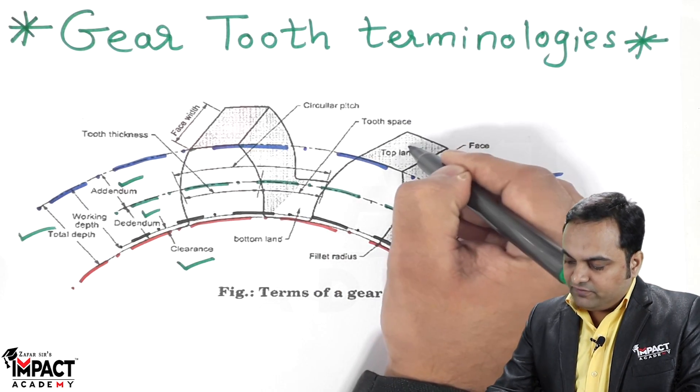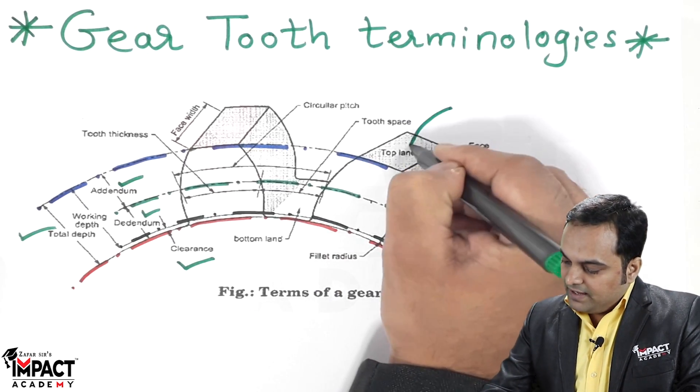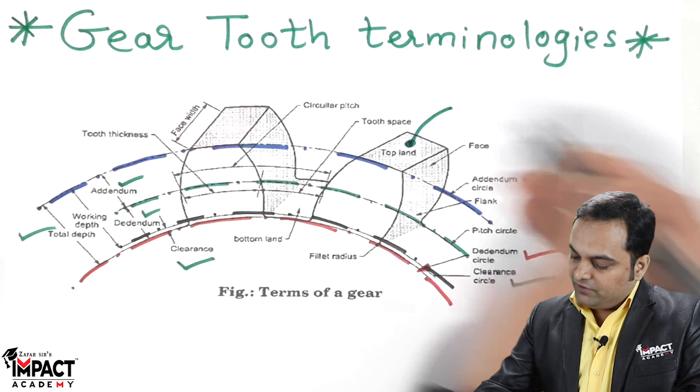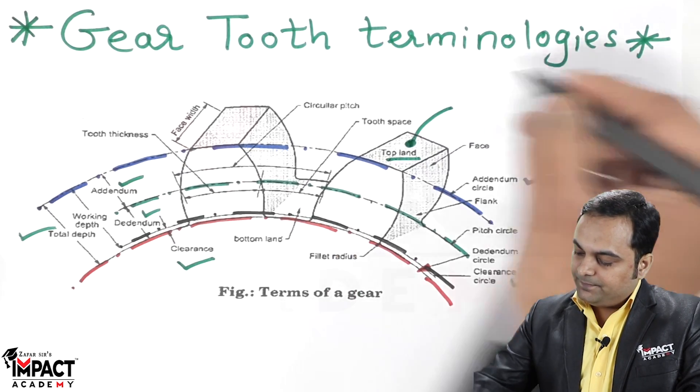The top surface of the gear teeth is called the top land.